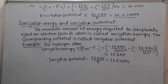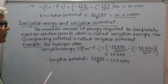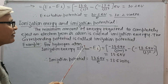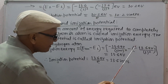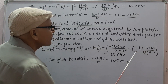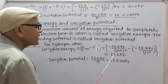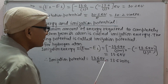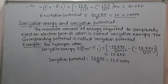Next, ionization energy and ionization potential. The minimum amount of energy required to completely eject an electron from its atom is called ionization energy, and the corresponding potential is called ionization potential. For example, for the hydrogen atom, ionization energy = E∞ − E1 = (−13.6 eV/∞²) − (−13.6 eV/1²) = 13.6 eV. Dividing by electronic charge e, we get the ionization potential: 13.6 eV / e = 13.6 V, which is the ionization potential of the hydrogen atom.